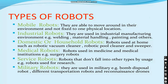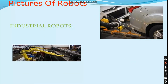The types of robots we're going to know include mobile robots, industrial robots, domestic or household robots, medical robots, service robots, and military robots. Every type of robot has a different unit and is programmed to do different things, with different uses in the environment — for example, the industrial robot handles materials. You can see pictures of industrial robots here, as shown.